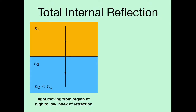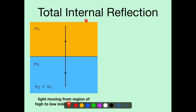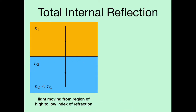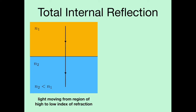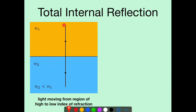The next topic is total internal reflection. The setup involves two materials: material 1 with index N1 (larger) and material 2 with index N2 (smaller). The light moves from high to low index of refraction. When theta1 = 0, theta2 is also 0. But if theta1 is increased, theta2 becomes even larger than theta1, because N1 > N2.